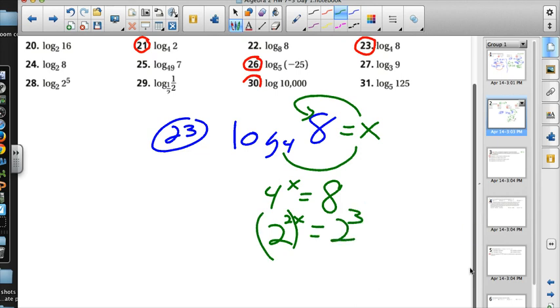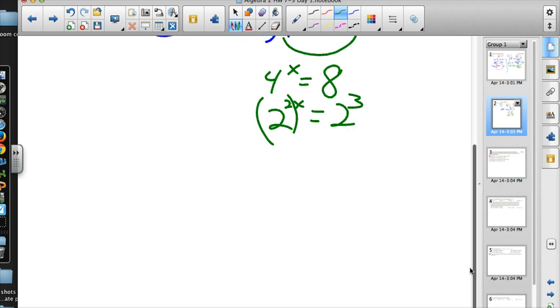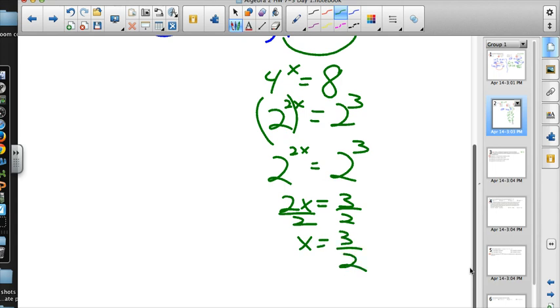So, 4 is 2 squared, and 8 is 2 to the third. Following the order of operations, power to power means multiply. And since the base of 2 is already the same, 2x would have to equal 3. Divide both sides by 2, and we get three-halves. So, 4 to the three-halves equals 8.